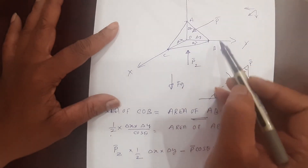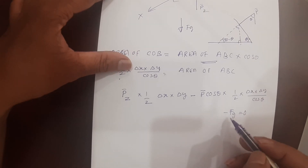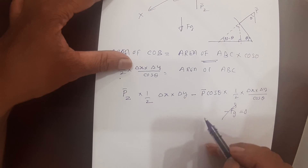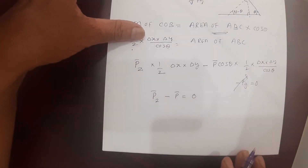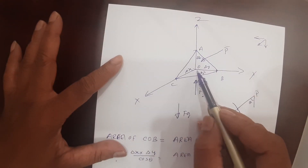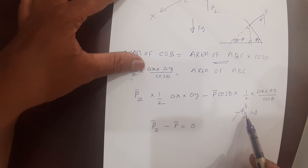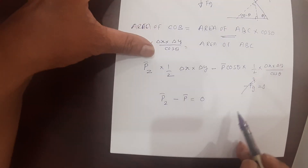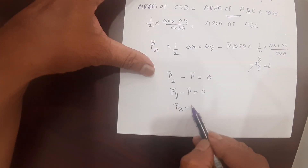The concept is: when plane ABC merges towards the center, delta-X, delta-Y, and delta-Z all vanish, and F_G becomes zero. The cos(theta) terms cancel, and you are left with P-bar-z minus P-bar = 0. Similarly for the Y direction: P-bar-Y minus P-bar = 0, and for X direction: P-bar-X minus P-bar = 0.